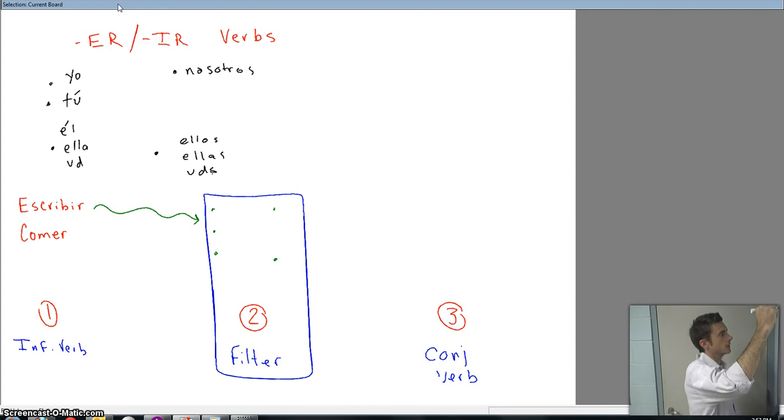The ER, IR ending for YO is O. For tú, es. El, ella, usted, e. Nosotros is a little tricky, so I'm going to mention that one last. Ellos, ellas, ustedes, en.